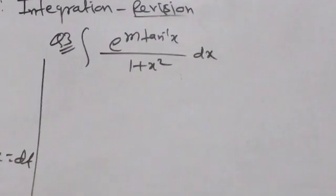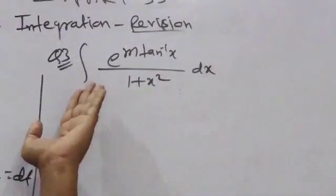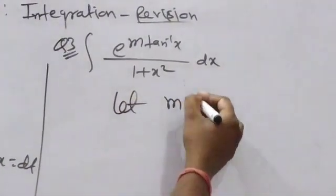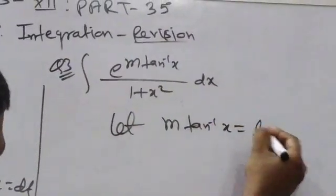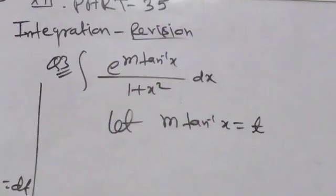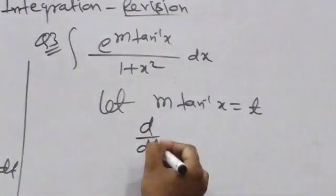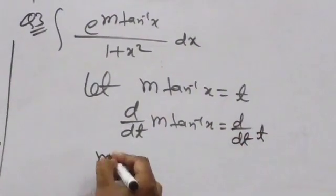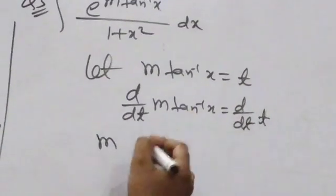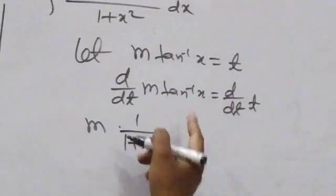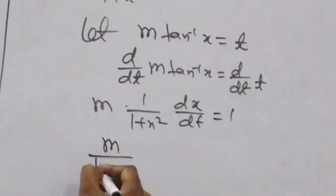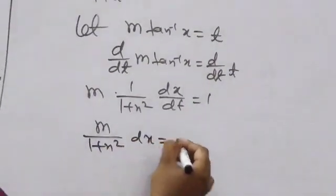Question number 3: integration of e^(m·arctan x) / (1 + x²). Let m·arctan x = T. Differentiating both sides: m · (1/(1+x²)) · dx = dT. Therefore dx/(1+x²) = dT/m.